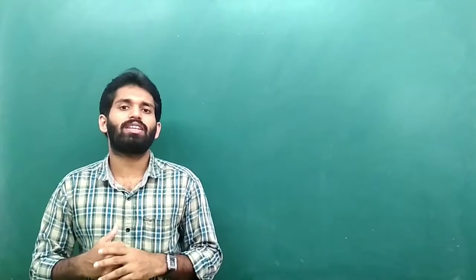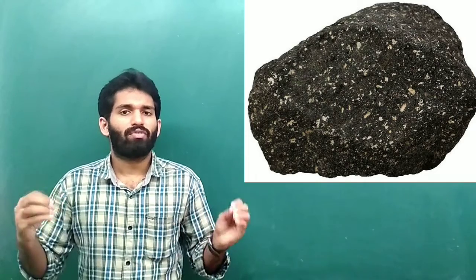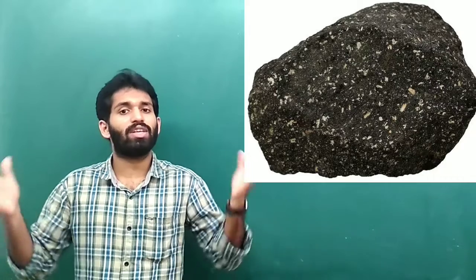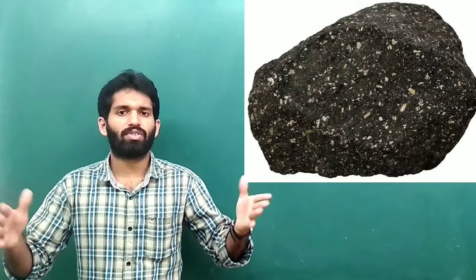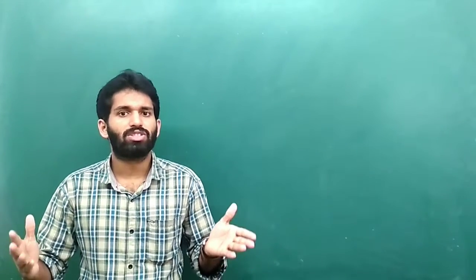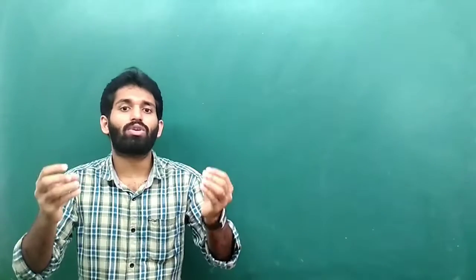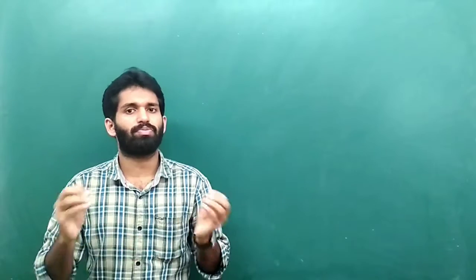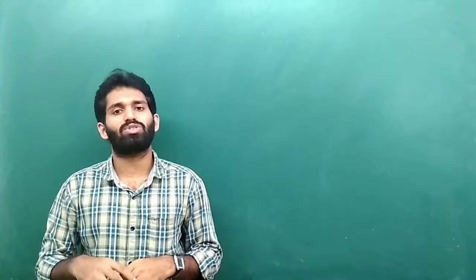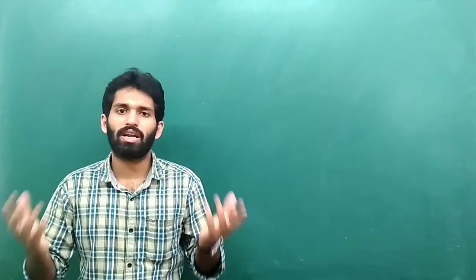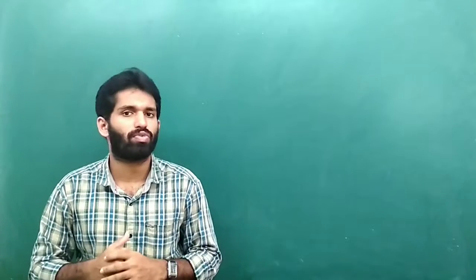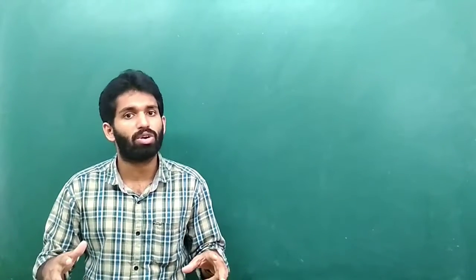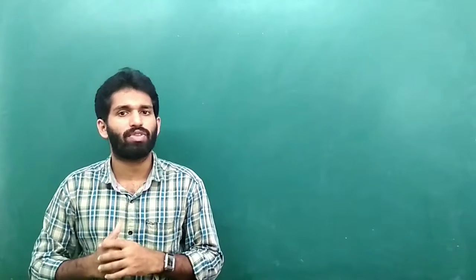The third one is basalt. It is formed by the fast cooling of lava outside the earth or on the surface of the earth. When the lava from a volcano comes out, it quickly cools down and hardens to form basalt. Basalt is mainly used for building purposes and is also used by goldsmiths to check the quality of gold.